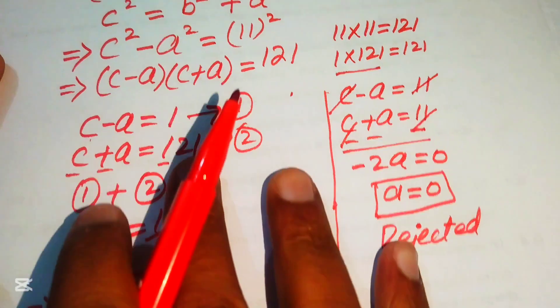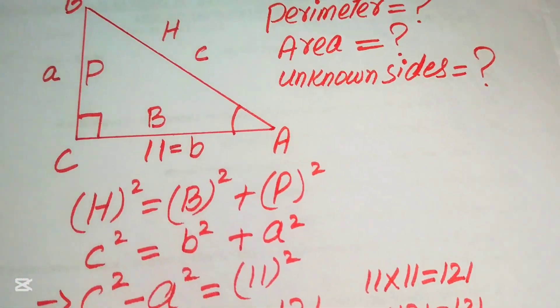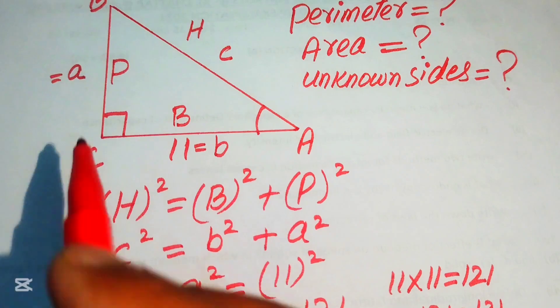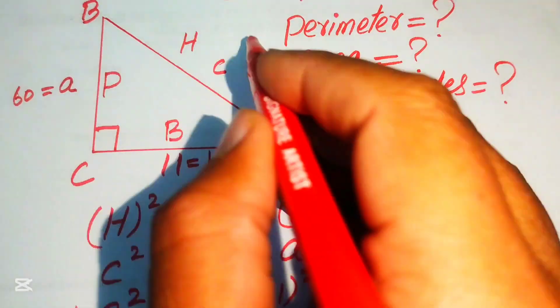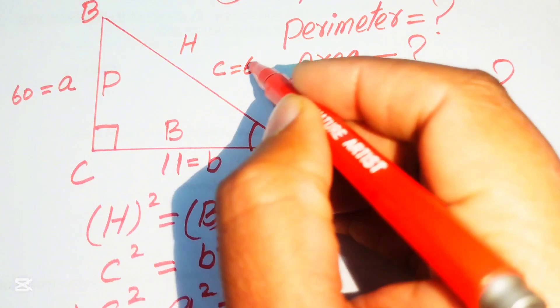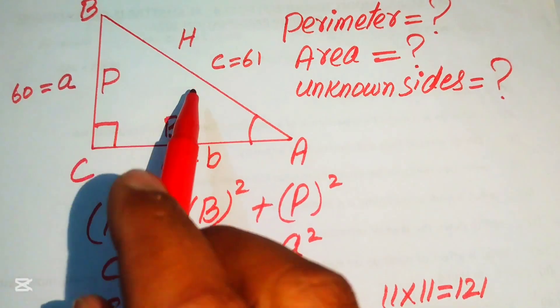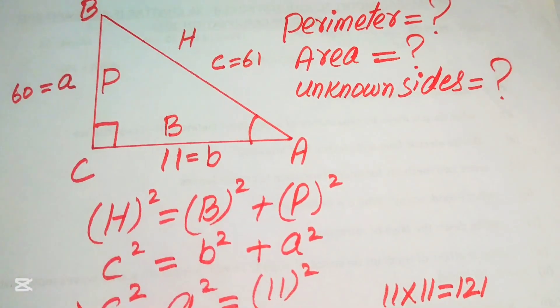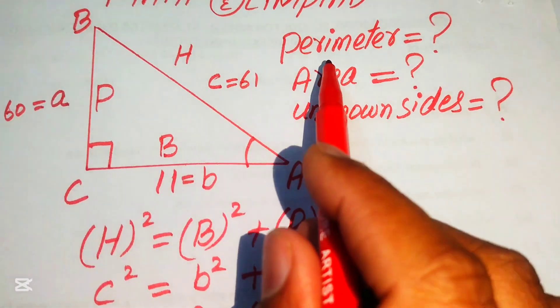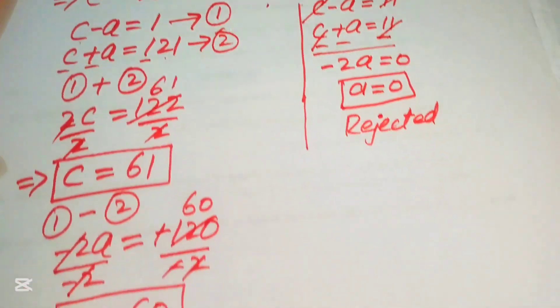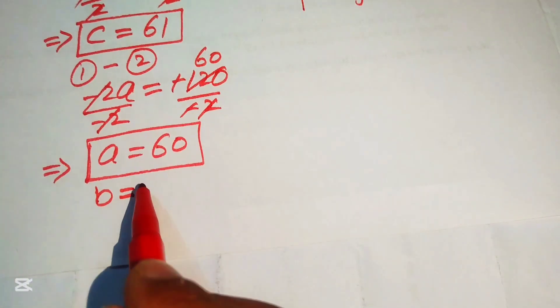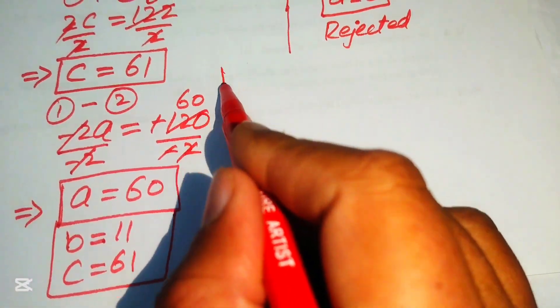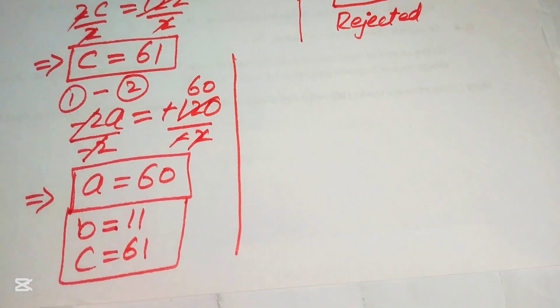So the three side lengths of the given right triangle are: a = 60, b = 11, and c = 61. Notice that c = 61 is the largest value, confirming it is the hypotenuse. We can now move on to finding the perimeter and area.